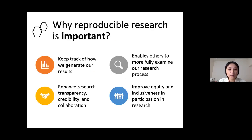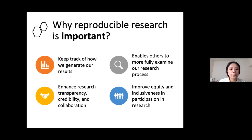Why is this important? When we make our work reproducible, it means we keep track of how we generate our results, because we write down the code and everyone can easily see the steps of how we do the data analysis. This enables others to examine our research process. In the long run, it enhances research transparency and credibility, increases collaborations, and improves equity in participation in research because we make our data and code openly available to everyone.